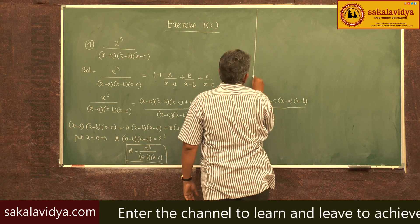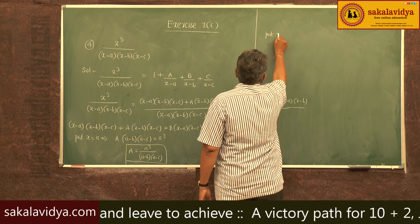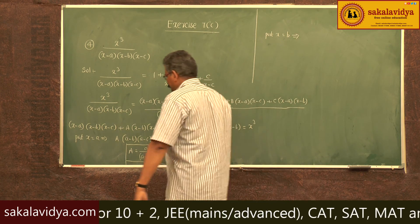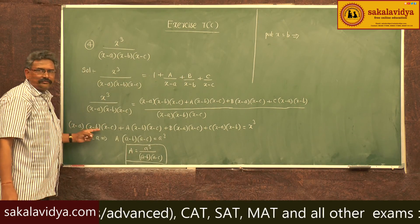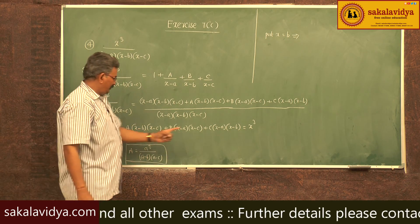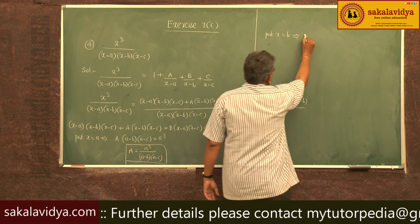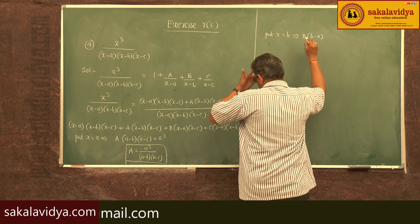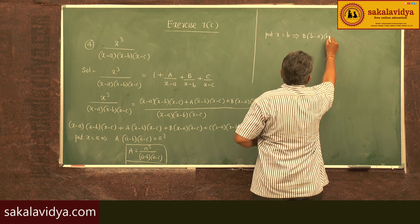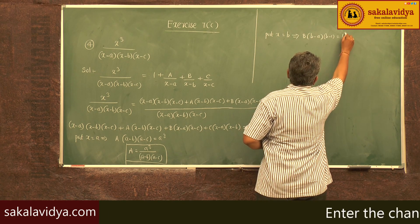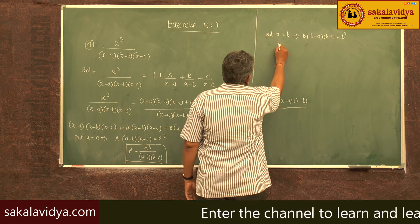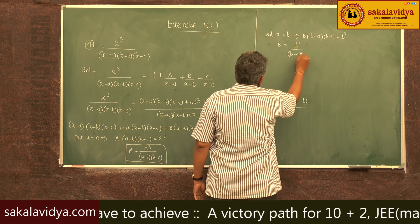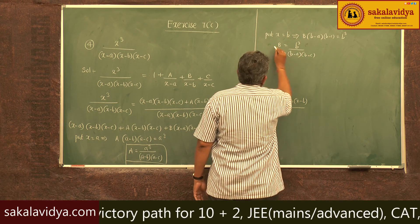Put x equal to b. All other terms become 0. So B times (b minus a)(b minus c) equals b cube. Therefore B equals b cube by (b minus a)(b minus c).